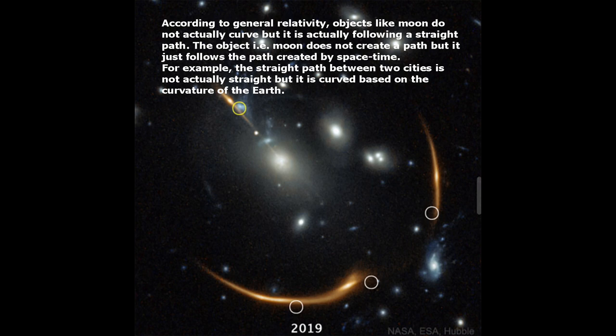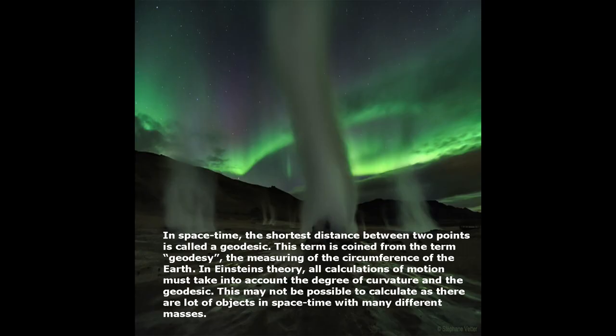For example, the straight path between two cities is not actually straight but is curved based on the curvature of the Earth. In space-time, the shortest distance between two points is called a geodesic, a term coined from geodesy, the measuring of the circumference of the Earth.